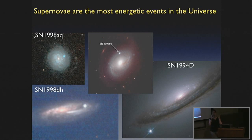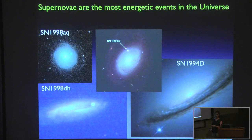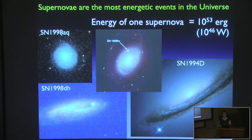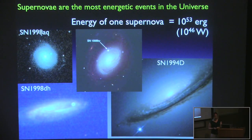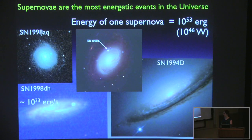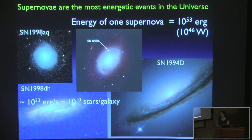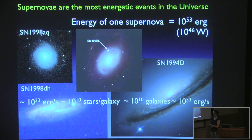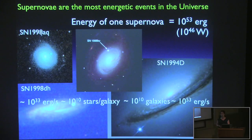The energy of one supernova explosion is about 10 to the 53 ergs. To convey how much energy that is, we compare it to all the energy in normal stars in the universe. The luminosity of the sun is about 10 to the 33 ergs per second. If there are 10 to the 10 stars in a Milky Way-like galaxy and 10 to the 10 galaxies in the universe, the total luminosity of all the stars in the entire universe is 10 to the 53 ergs per second. So all of the stars in the whole universe are equal to one supernova explosion — extremely energetic, with a profound impact on many astrophysical phenomena.